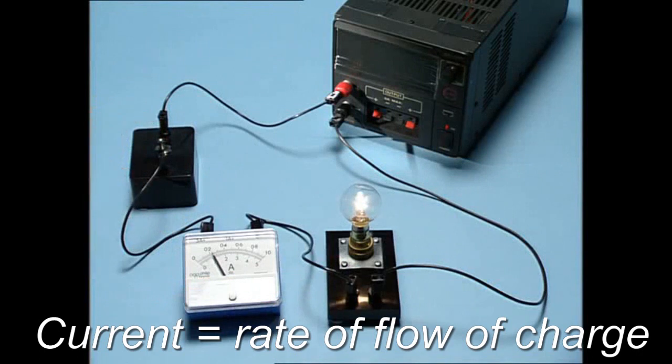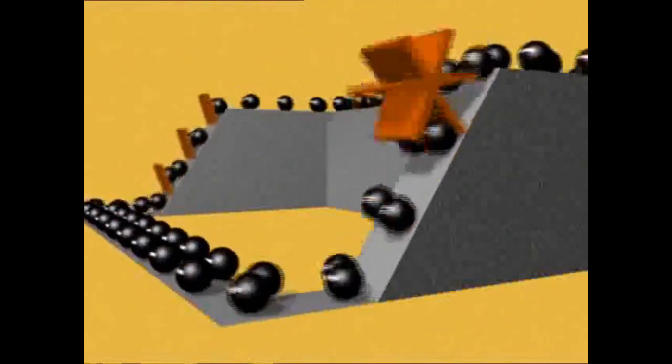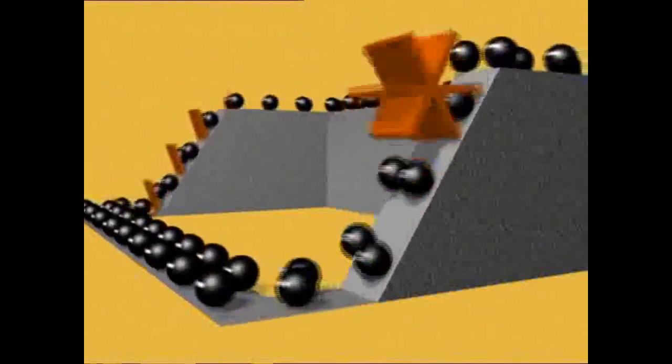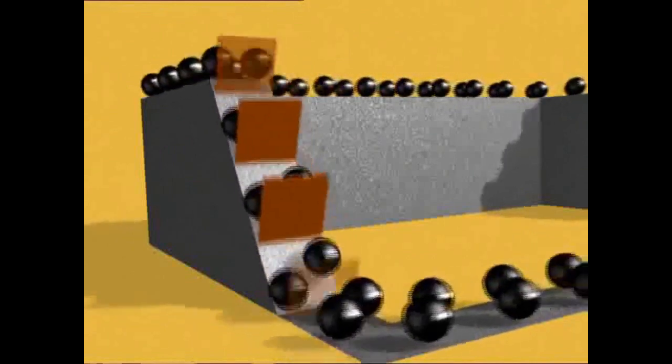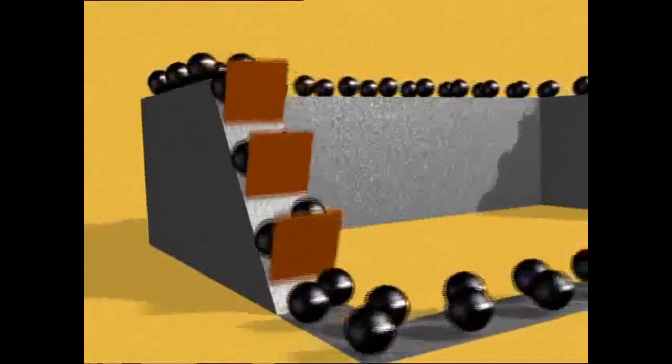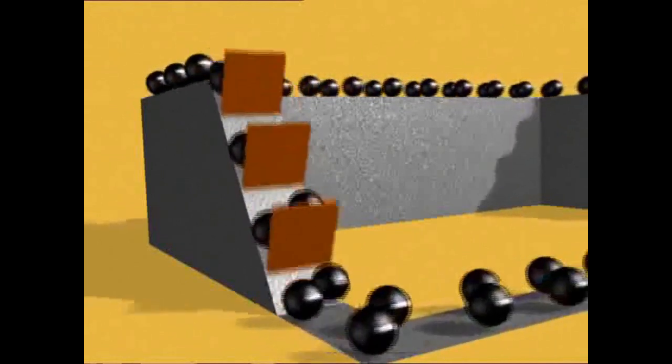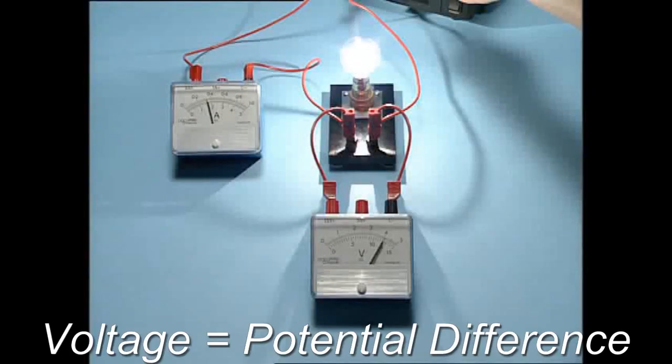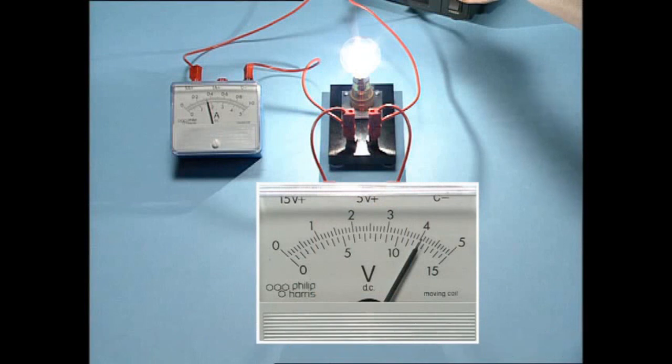Current is the amount of charge passing a point in one second. It's measured with an ammeter. In our model, the current is the number of electrons passing the paddle wheel per second. Voltage is the amount of potential energy the electrons are carrying. In our model, voltage is represented by the height of the electrons. The voltage between two points in a circuit is measured by a voltmeter. Here, reading the lower scale, it's 12 volts across the bulb.